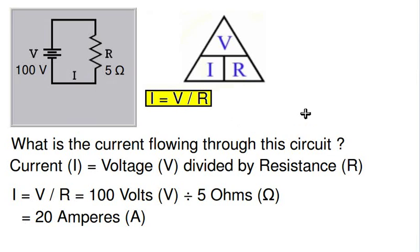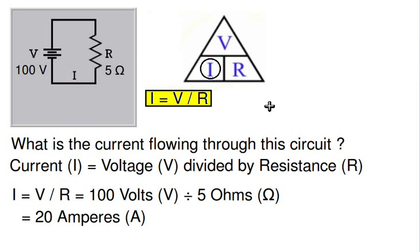To find current, we use the Ohm's law memory aid V over IR. If we cover up I, that gives us V over R, or I equals V divided by R — current equals voltage divided by resistance. So in this case we have 100 volts divided by 5 ohms, which gives us 20 amperes. So 100 volts would push 20 amperes of current through a 5 ohm resistive load.